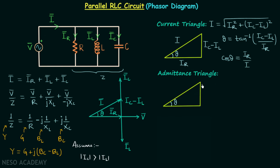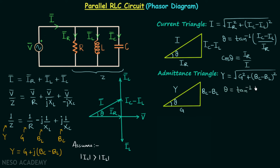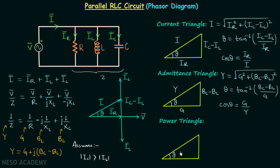Moving on to the admittance triangle: this side is admittance Y, this side is BC minus BL, and this side is conductance G. Y equals the square root of G² plus (BC minus BL)². Theta equals tan⁻¹ of (BC minus BL) over G, and cos θ equals conductance over admittance.